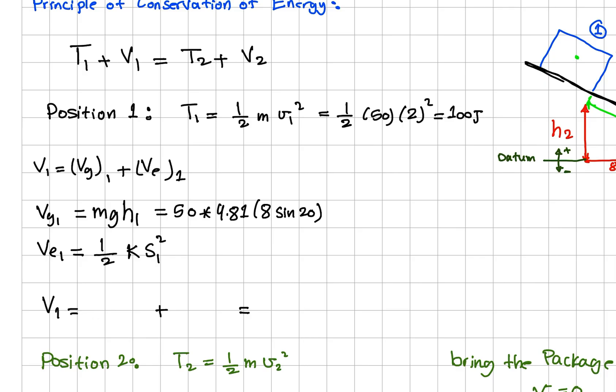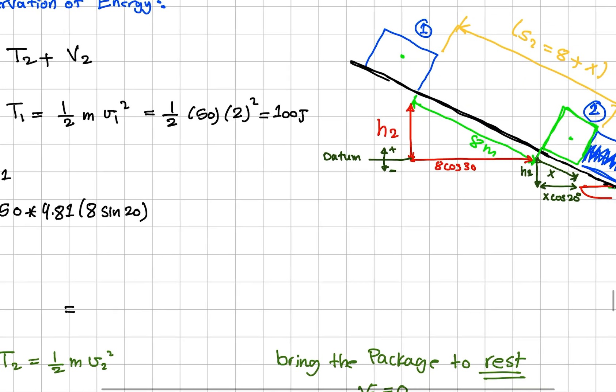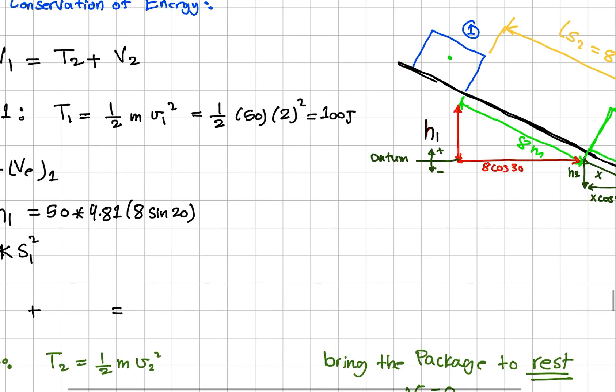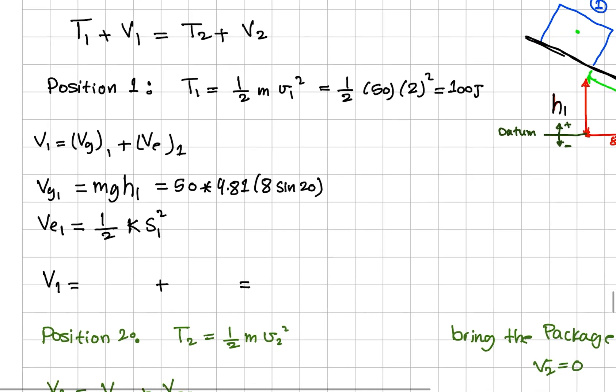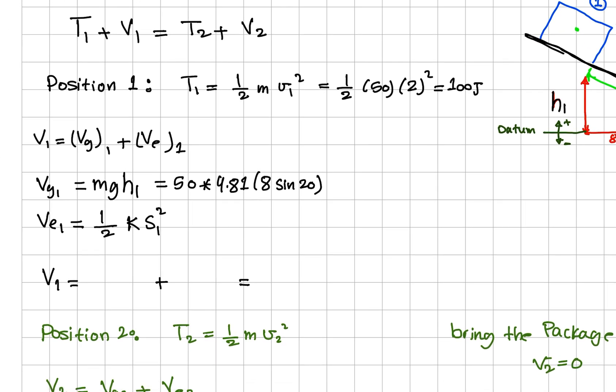So this is h1. This is the sine component of the 8 meters. From here we can have gravitational energy equal to 1342.09 joules.